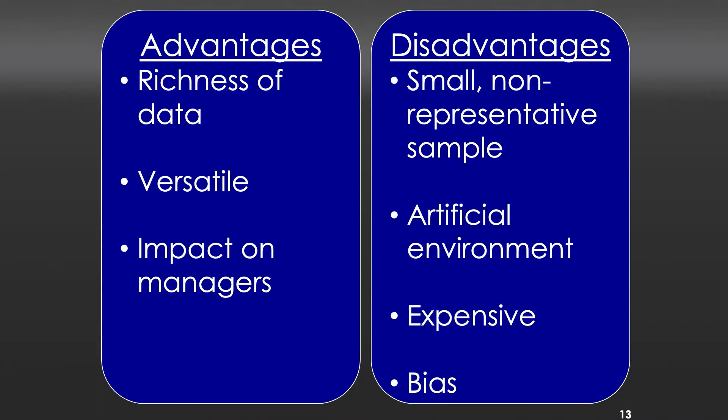On the disadvantages side: you'll have small, non-representative samples — small groups that don't necessarily represent all people who might consume your product. The environment is very artificial; people are not in their homes using products, they're in a room with strangers and a moderator. We don't know if their responses will remain consistent when they leave. Focus groups are also super expensive — easily running into the thousands of dollars per session, potentially hundreds of thousands across multiple groups. And the quality of what you're getting is suspect. Finally, there's bias.